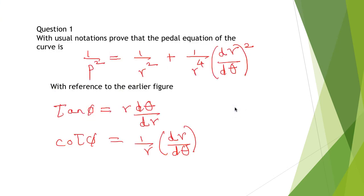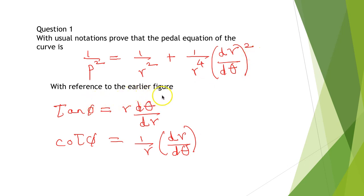With usual notations, prove that the pedal equation of the curve is 1/p² = 1/r² + (1/r⁴)(dr/dθ)². We use the earlier figure and first prove that tan φ = r dθ/dr, or equivalently cot φ = (1/r)(dr/dθ).